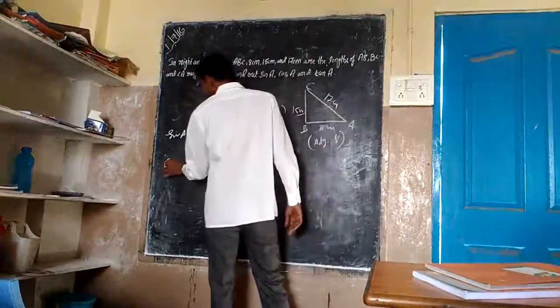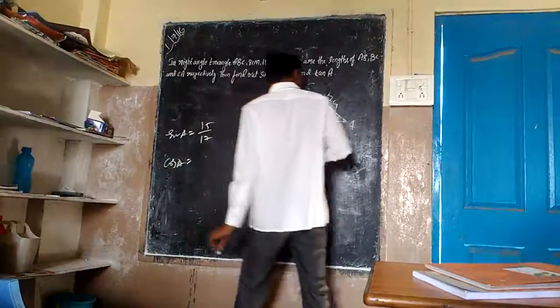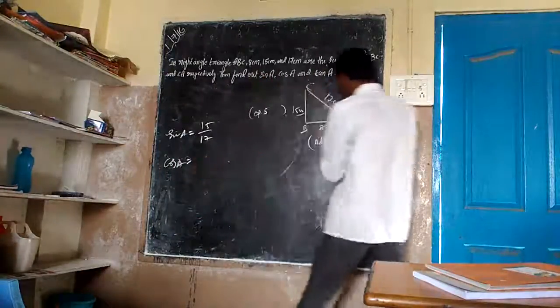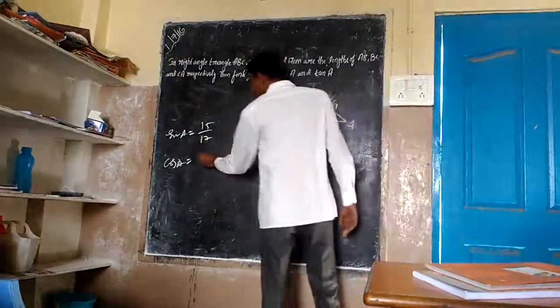The next one is cos A. Cos A is equal to adjacent side over hypotenuse. Is it adjacent side? 8 by 17.